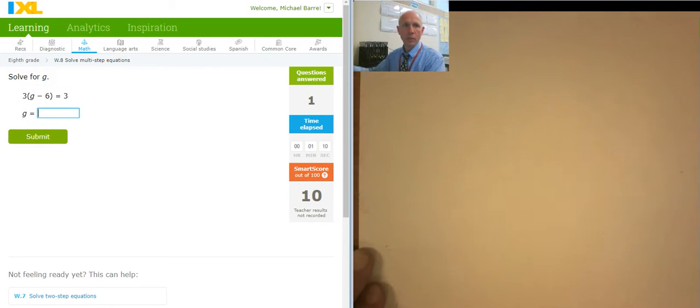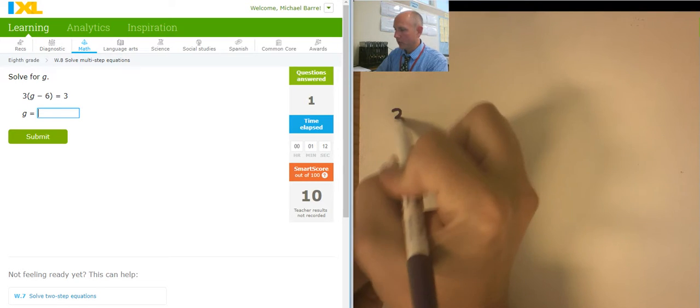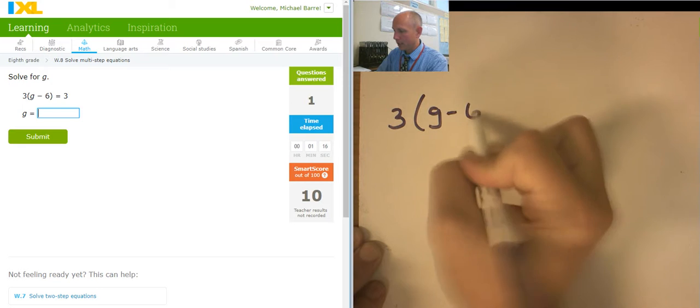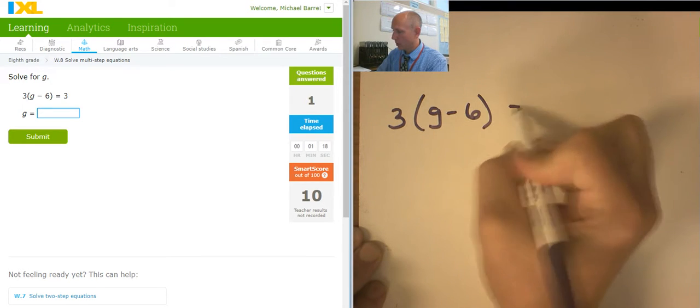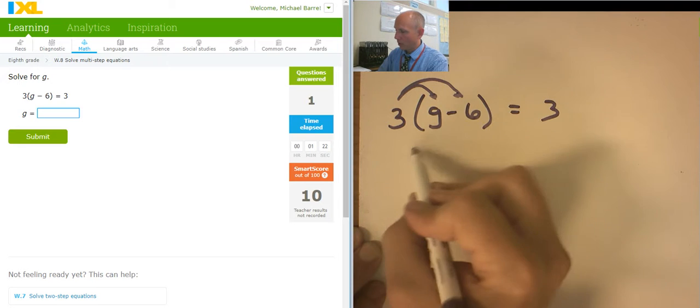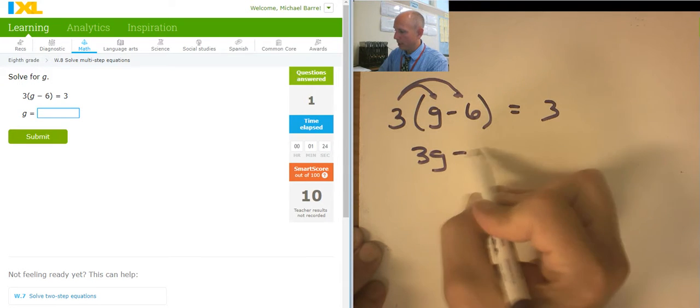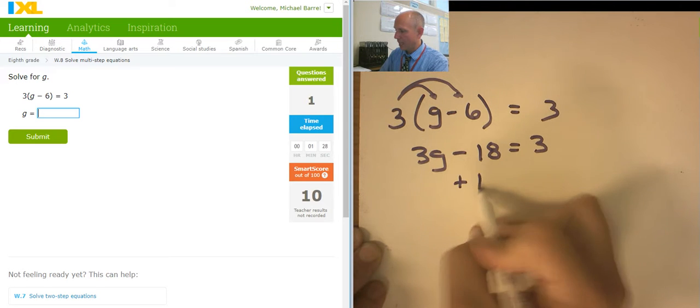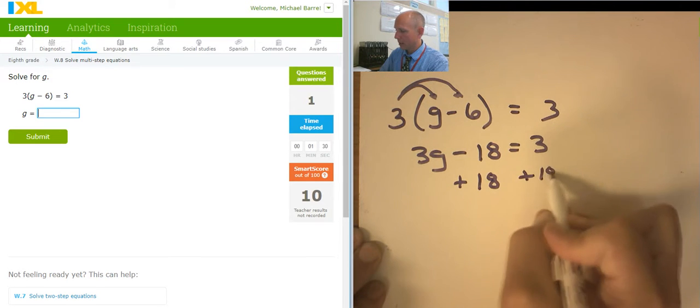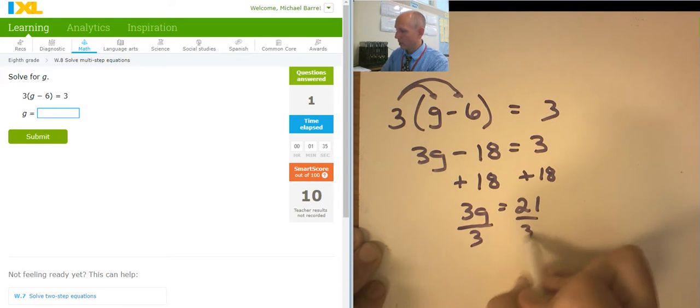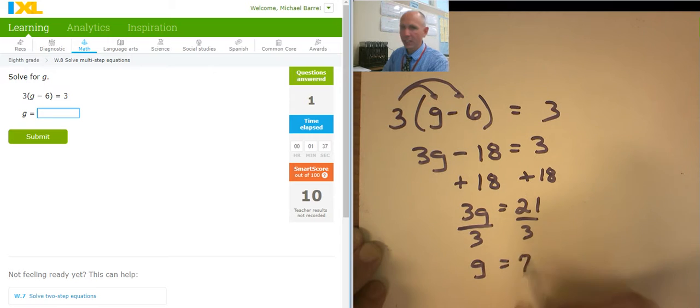So a little distribution. This one's going to start with some distribution. 3g minus 6 equals 3. Some distribution. 3g minus 18 equals 3. Adding 18 to both sides. 3g equals 21. Dividing both sides by 3. g equals 7.